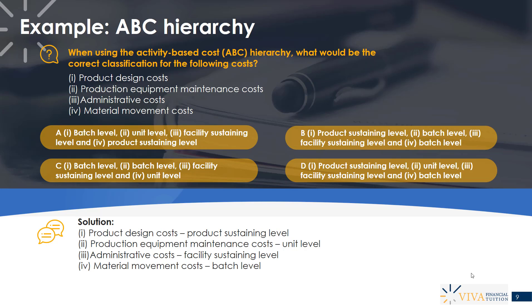Material movement costs are generally classified as batch level costs. Every time we produce a batch of products, we move materials from the stores warehouse to the factory floor so they're ready for production. So our four classifications are: product design — product sustaining; equipment maintenance — unit level; admin costs — facility sustaining; and material movement — batch level. That matches answer D.